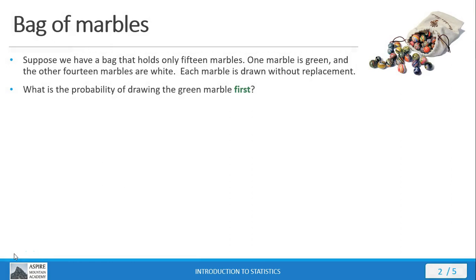Let's suppose we have a bag of marbles and inside the bag there are 15 marbles. One of these 15 marbles is green and the remaining 14 marbles are white. We're going to draw each of these marbles without replacement — each marble we take out we do not put back in the bag. Given these parameters, what is the probability of drawing the green marble first? We just take the part over the whole: 1 green marble out of 15 total. So the probability of drawing the green marble first is 1/15.